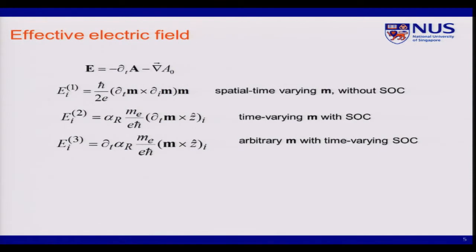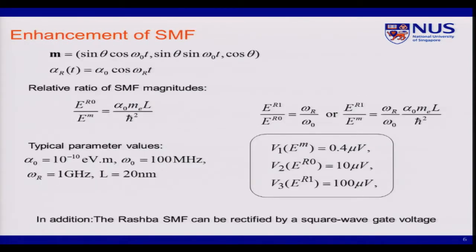So the electric field can be calculated like the delta A. And here I derive the three terms of the electric field, which depend on the profile of the magnetic and the Rashba. So once I obtain this electric field, I can derive the electric motive force, and that spin-motive force can generate spin current.